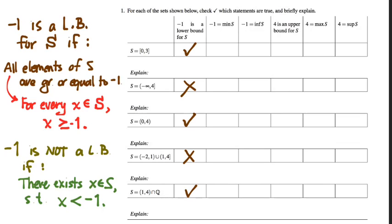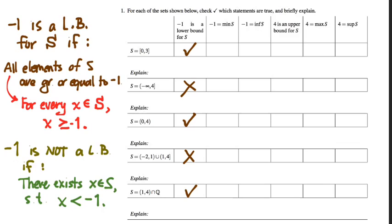As the saying goes, it only takes one bad apple to spoil the bunch. As soon as we have one example of something for which this does not work, we've shown negative 1 is not a lower bound. So 'for every' turns into 'there exists.' Get practice stating the definition precisely and also stating its negation, so we know how to prove or disprove either. For the set negative infinity to 4, for example, negative 2 is an element of S but it's less than negative 1 — that fits the negation.